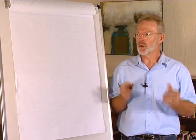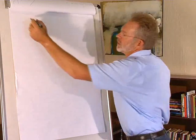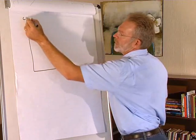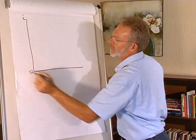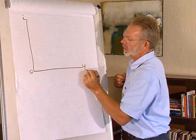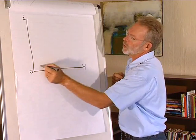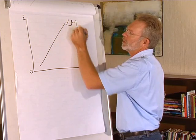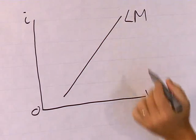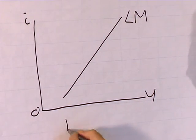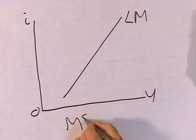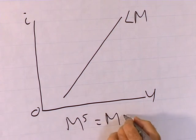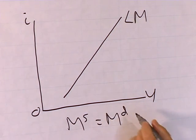The LM curve shows all the combinations of interest rate and level of production where the financial market is in equilibrium. The financial market is in equilibrium where the supply of money is equal to the demand for money.